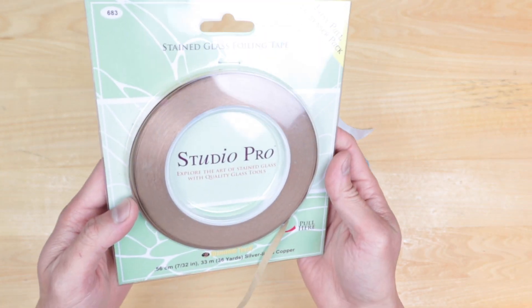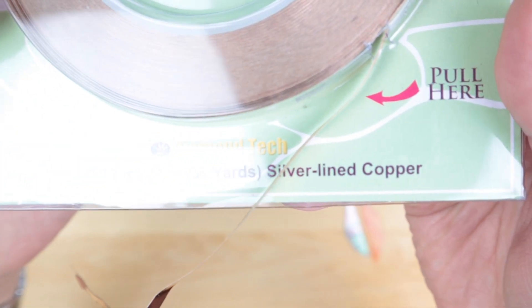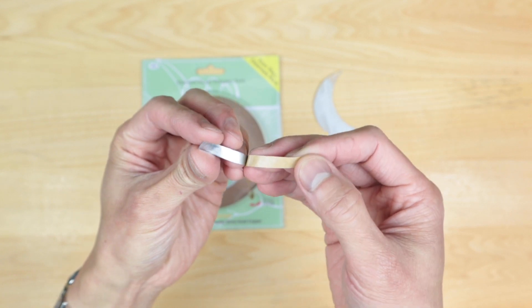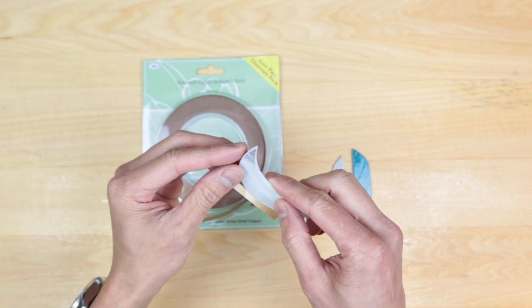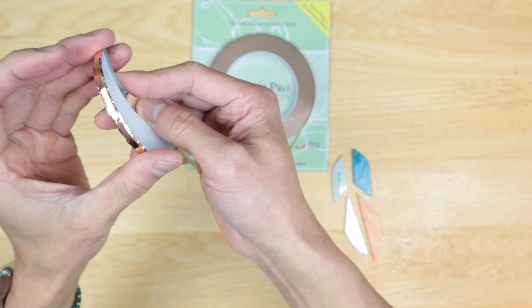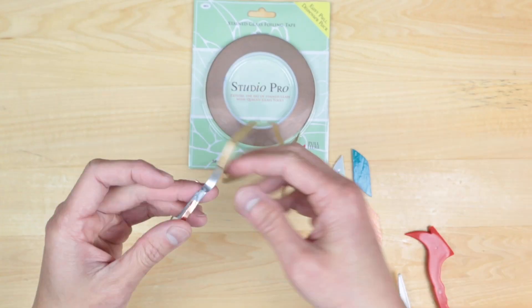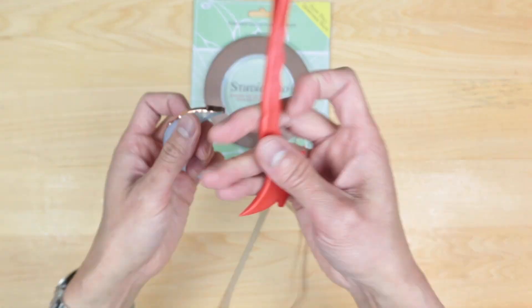Now we're ready for the copper foiling. We'll be using the 7/32nds of an inch width with the silver backing since we won't be using any patina for this particular project. Take the copper tape and wrap it around the edges of each piece keeping it as nice and even as possible on the edge of the glass. Once you've made your way to the beginning clip that off and fold it right over to overlap.